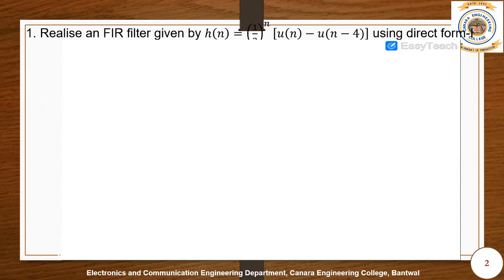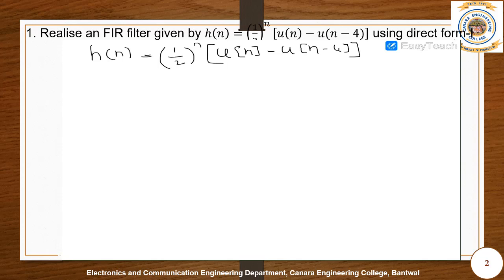We need to realize the FIR filter whose impulse function h(n) is given by h(n) = (1/2)^n [u(n) - u(n-4)] using direct form. This can be written as: when n=0, h(n)=1; when n=1, h(n)=1/2; when n=2, h(n)=1/4; when n=3, h(n)=1/8. For all values of n equal to 4 or greater than 4, h(n) is going to be 0.